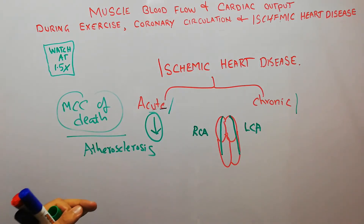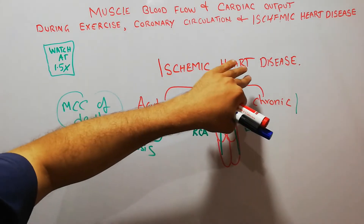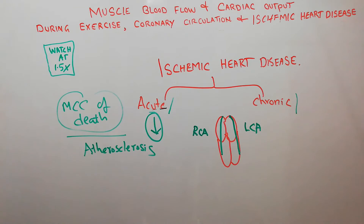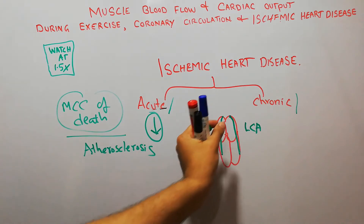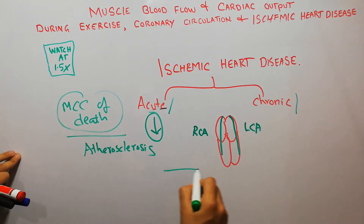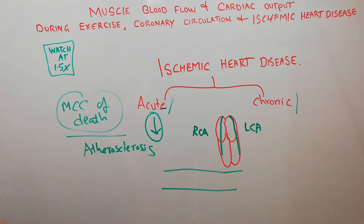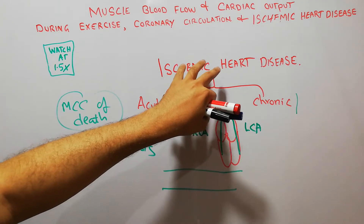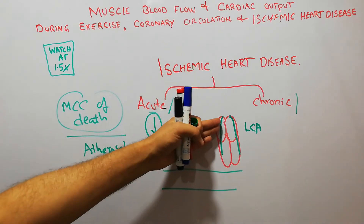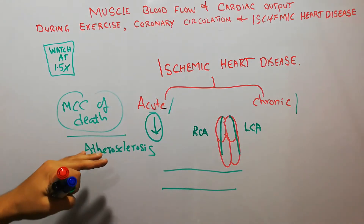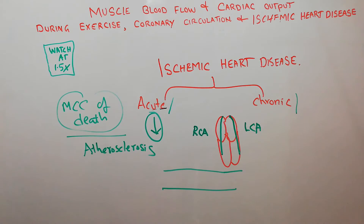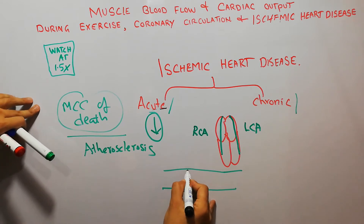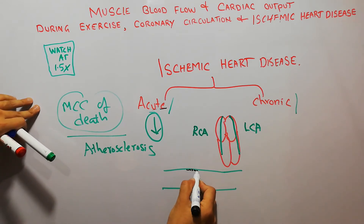To understand ischemic heart disease we must understand the atherosclerosis process. We will take a small portion of the coronary artery and enlarge it. Atherosclerosis is the most common cause of ischemic heart disease, and the atherosclerosis process is basically the deposition of lipids in the blood vessels.